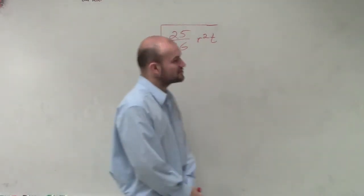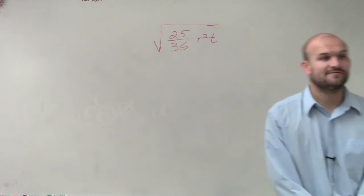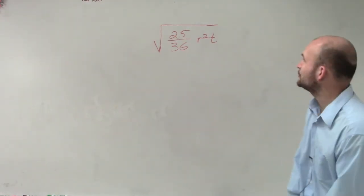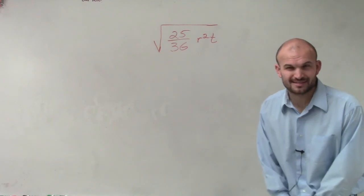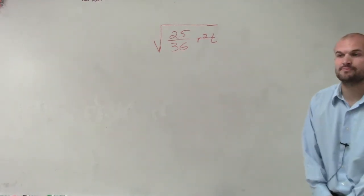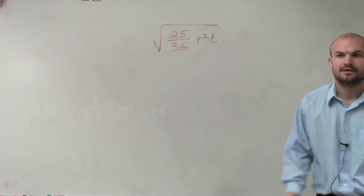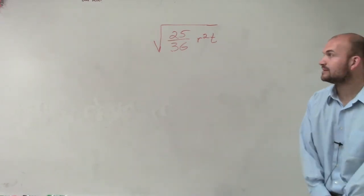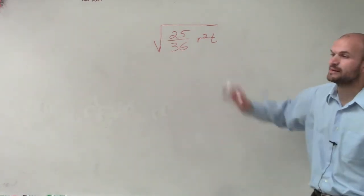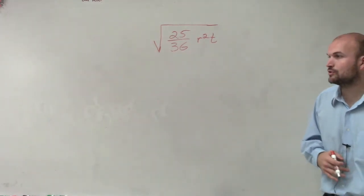We have the square root of 25 squared divided by 36, and then it's multiplied by r squared times t. What I'm going to have to do for this problem is simplify it. One thing that would help us out with this, when you have so many multiple terms, remember we can apply the product rule of radicals.